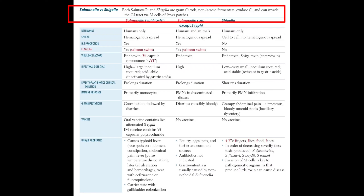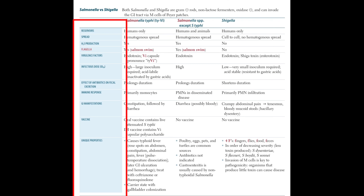Today we are going to talk about Salmonella and Shigella. Both Salmonella and Shigella are gram-negative bacteria. They are non-lactose fermenters and they are oxidase negative. They can invade the gastrointestinal tract via the M cells of the Peyer's patches.